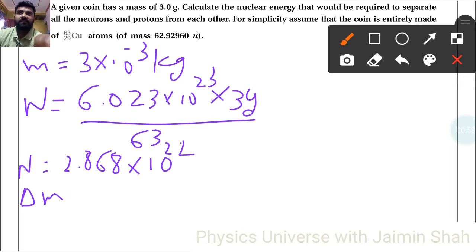Now delta m is equal to 29 copper, 29 into mp plus 63 minus 29 is 34, mn minus m.